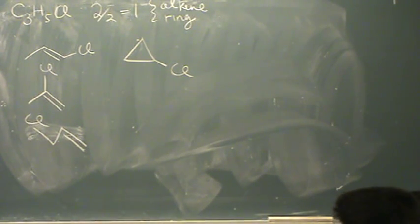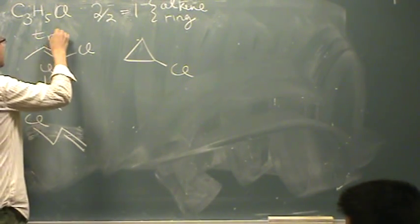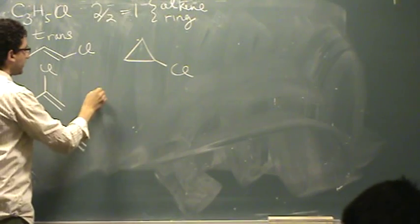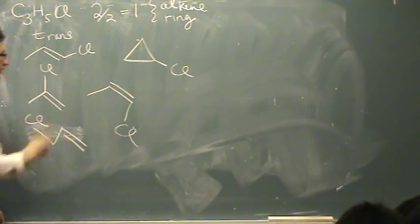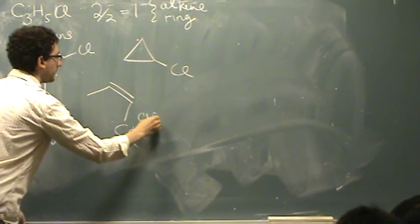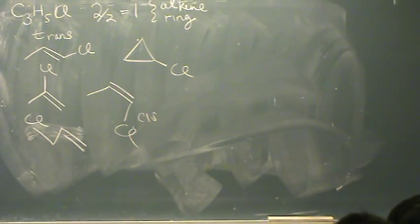There's four. I could, for fun, add the geometric isomers. Which one will have a geometric isomer? One, two, three, or four? Number one will. Yeah, this is drawn as trans. I could draw it as cis, where they're both on the same side of the double bond. Nothing else will have the cis trans. Okay? Any questions on that?